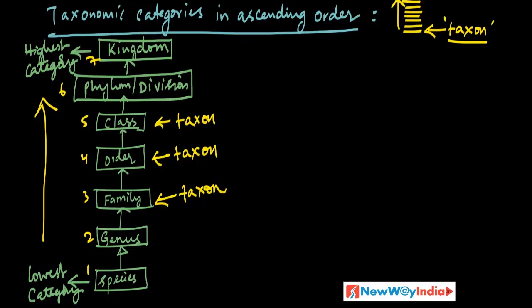A kingdom is divided into phyla or divisions. Each phylum is divided into classes. Each class is divided into orders, then families, genus, and species. Going upward, species combine to form a genus, genera combine into families, families into orders, orders into classes, classes into phyla, and phyla into kingdoms.